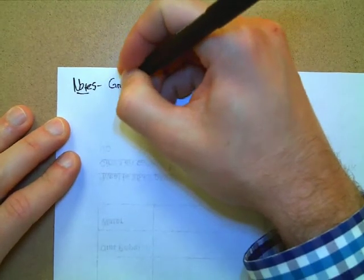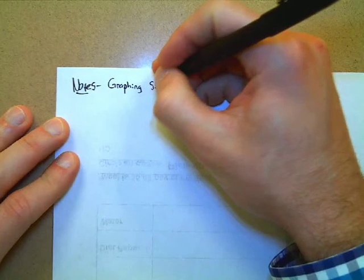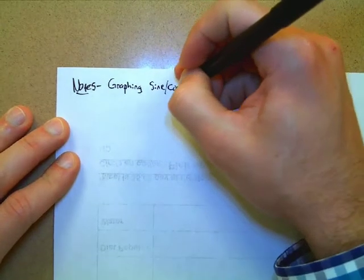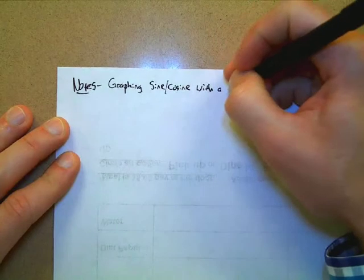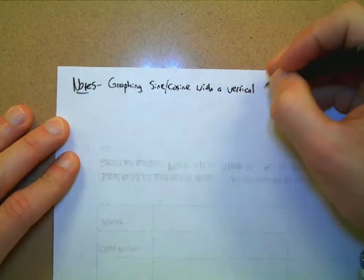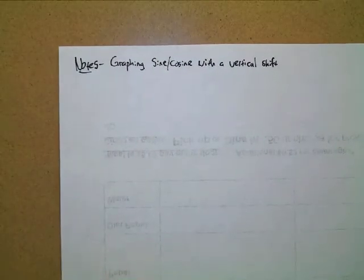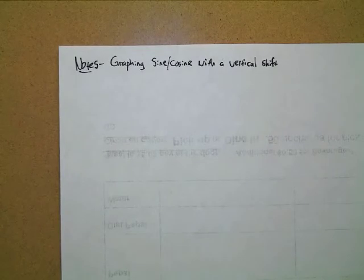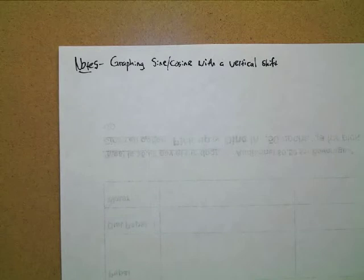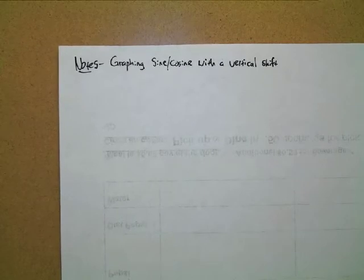Graphing sine and cosine with a vertical shift. We'll do maybe one or two with just a vertical shift and then jump into graphing with multiple transformations going on. I won't go too crazy with that because it can be a little complex depending on what you're looking at.